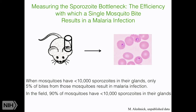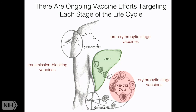I'll now talk about vaccine strategies for targeting these two transmission stages. There are ongoing vaccine efforts to target each life cycle stage. I'm going to talk about pre-erythrocytic stage vaccines, which target sporozoites and liver stage parasites, and transmission blocking vaccines — the ones that block transmission in the mosquito. Dr. Crompton will address blood stage vaccines.